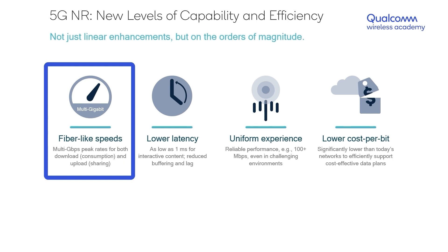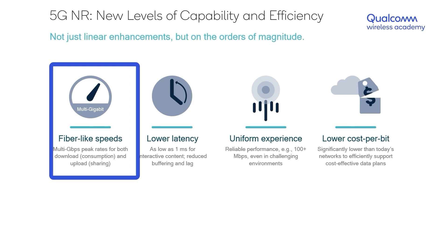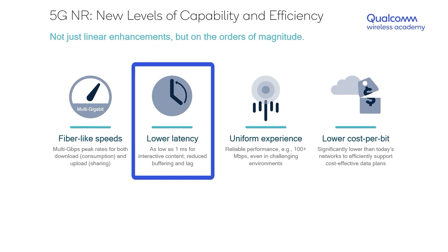5G has been designed to provide bitrates on the order of multiple gigabits per second — not just for download, but for upload as well. As far as packet latency goes, which is the time delay it takes for a data packet to go from one end to the other, that latency metric has also been optimized in the 5G design. Under certain conditions, 5G can help you achieve packet latencies as low as 1 millisecond, or just a few milliseconds in other conditions.